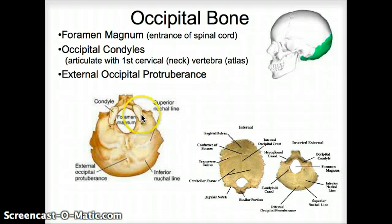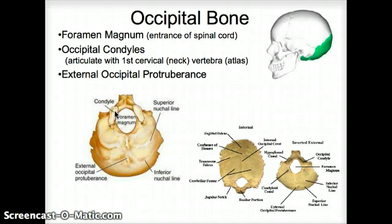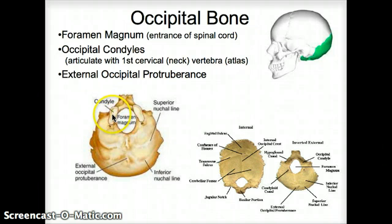There are actually a lot of holes inside the skull, but we won't worry about most of them here since we're just having a breeze-through session. Then we have occipital condyles — here is one, and here is the second one on either side. Those are what connects the skull to the vertebral column, to the first vertebra. They articulate — meaning they form a joint — with C1, which is known as the Atlas.